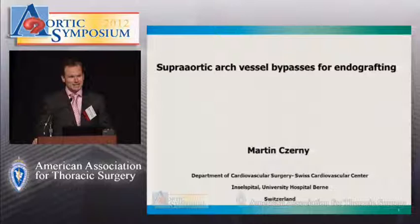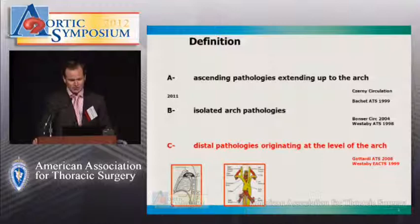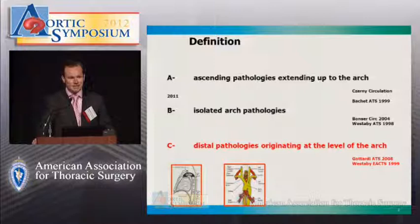Dr. Grieb, Dr. Lansman, Joe — I'm very happy to have the next few minutes to share with you our experience of various extents of artery routings in patients for a combined vascular and endovascular approach of treating multisegmental thoracic aortic disease originating at the level of the arch. And I think that's the first important point.